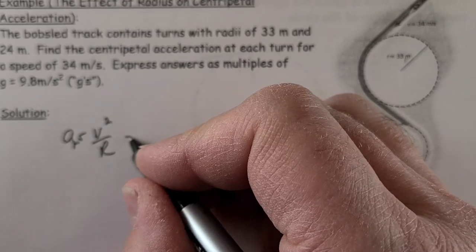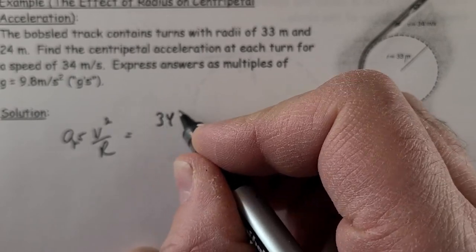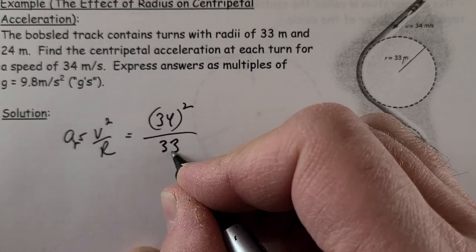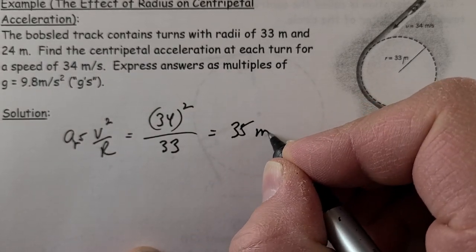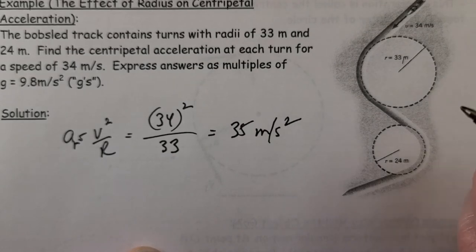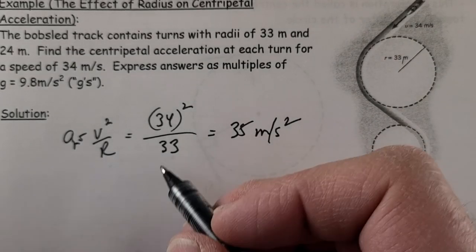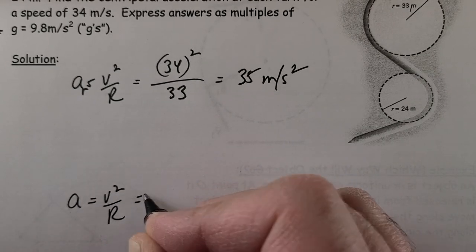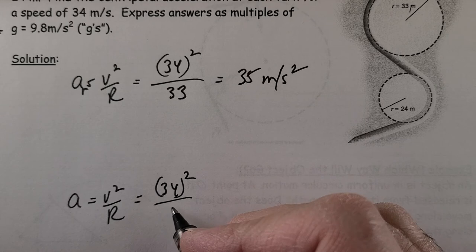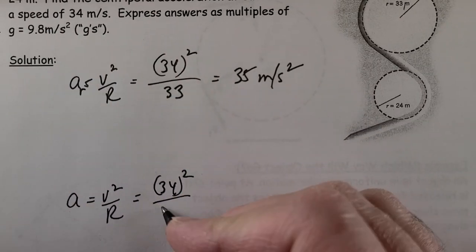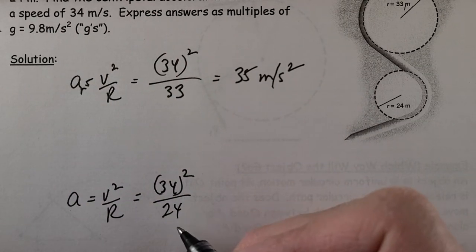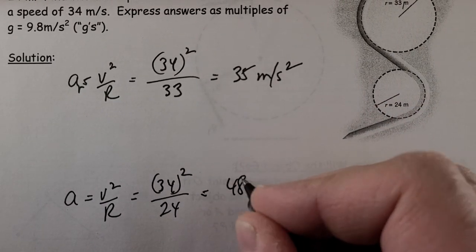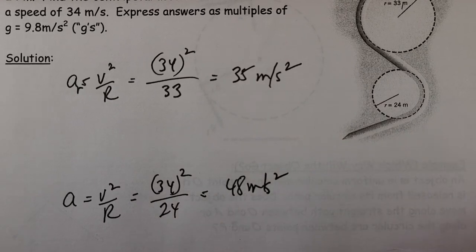Let's look at the first one. We're going at 34 meters per second around the bigger circle. So we get 35 meters per second squared. I'll get you to leave some room right here and we'll do the second one. A equals v squared over r. 34 squared over, this time it's a tighter turn, 24. You can see if I'm dividing by a smaller number, a tighter turn, you're going to experience more g's, 48 meters per second squared.